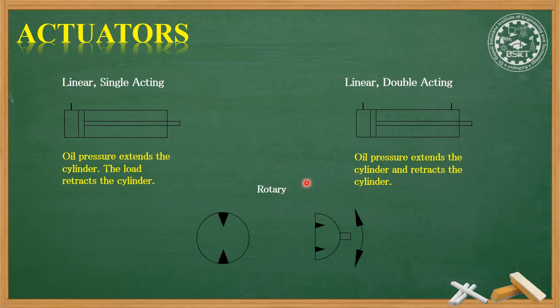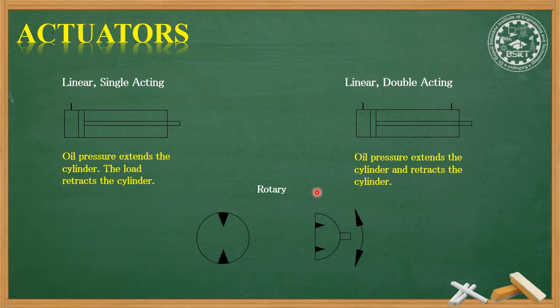Then we have rotary hydraulic actuators. In rotary actuators, the first symbol indicates full rotation with double acting — meaning it can rotate in both directions. The second symbol has a limited arc shown, meaning it has limited motion — it can only rotate up to a certain angle. This is the semi-rotary actuator. These linear and rotary actuator symbols are important for the next slides.